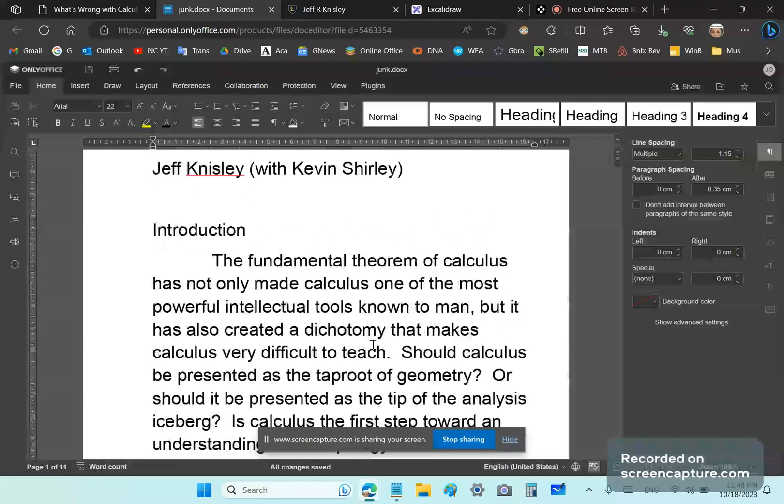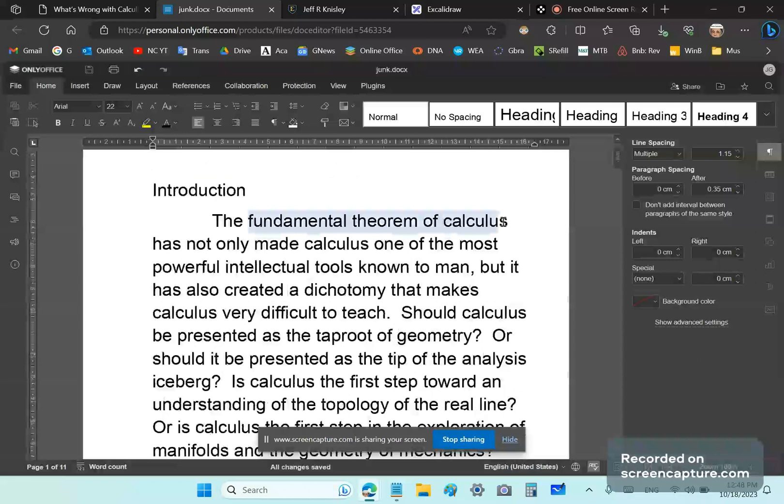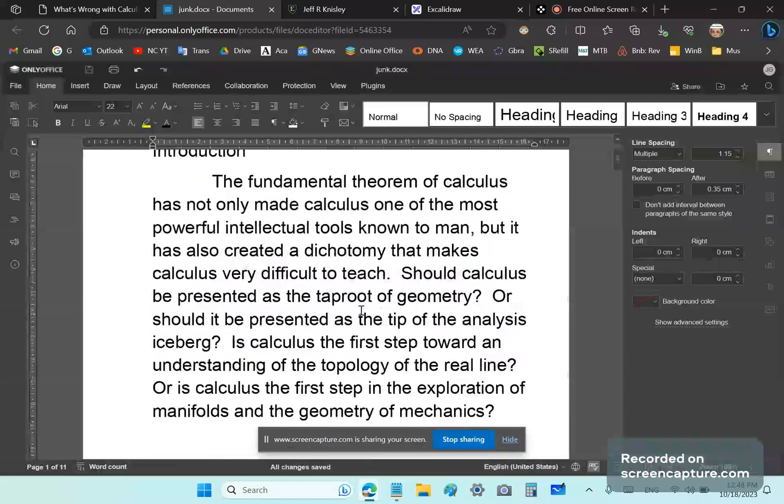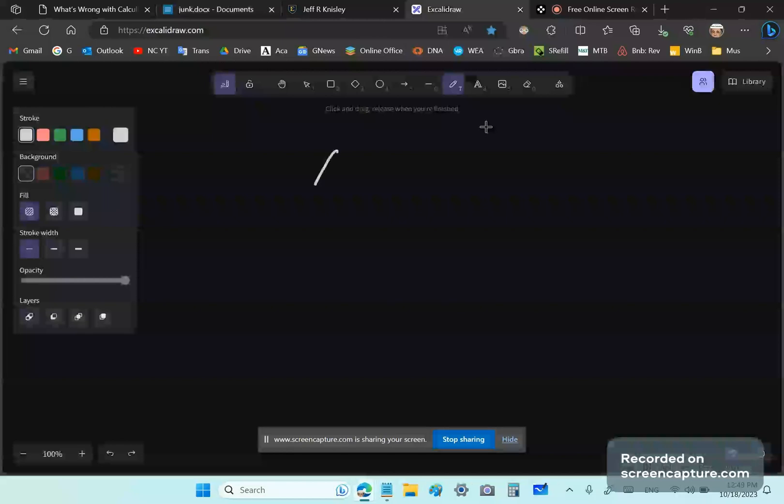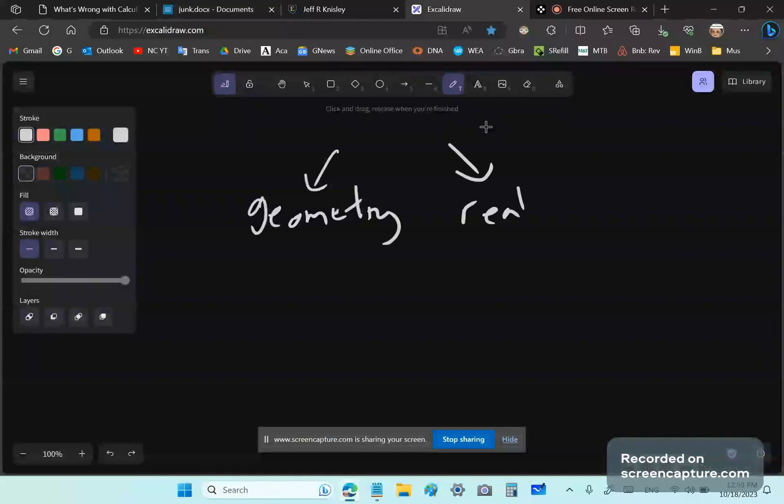So let's go through some of the points of his article. What I explained to him is that there is an education crisis in calculus because mainstream academics don't really understand calculus. And it doesn't take long for me to prove it from his own article. So he says the fundamental theorem of calculus has not only made calculus one of the most powerful intellectual tools known to man, but it has created a dichotomy that makes calculus very difficult to teach.